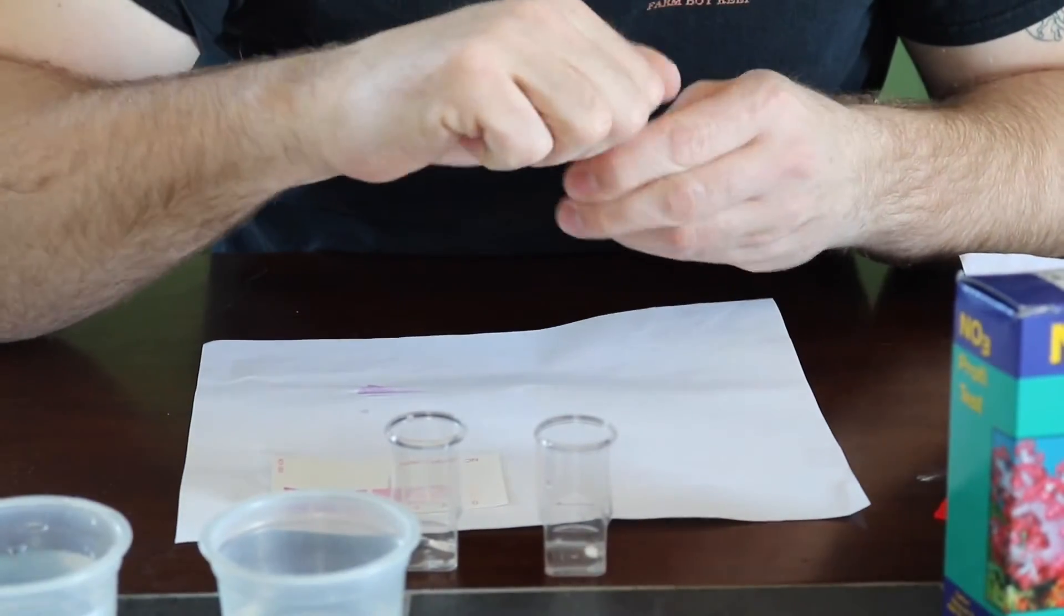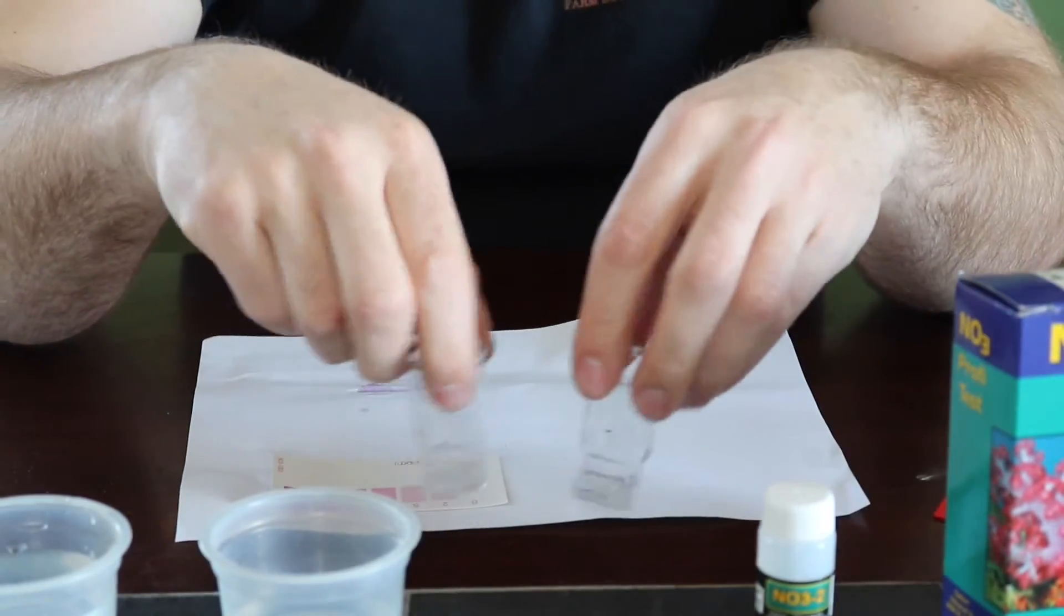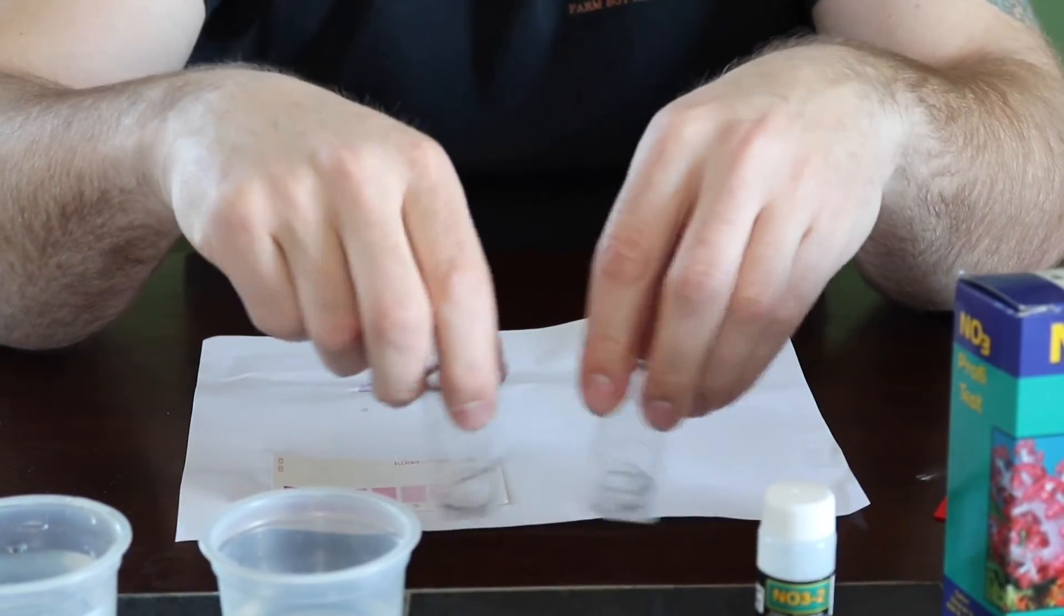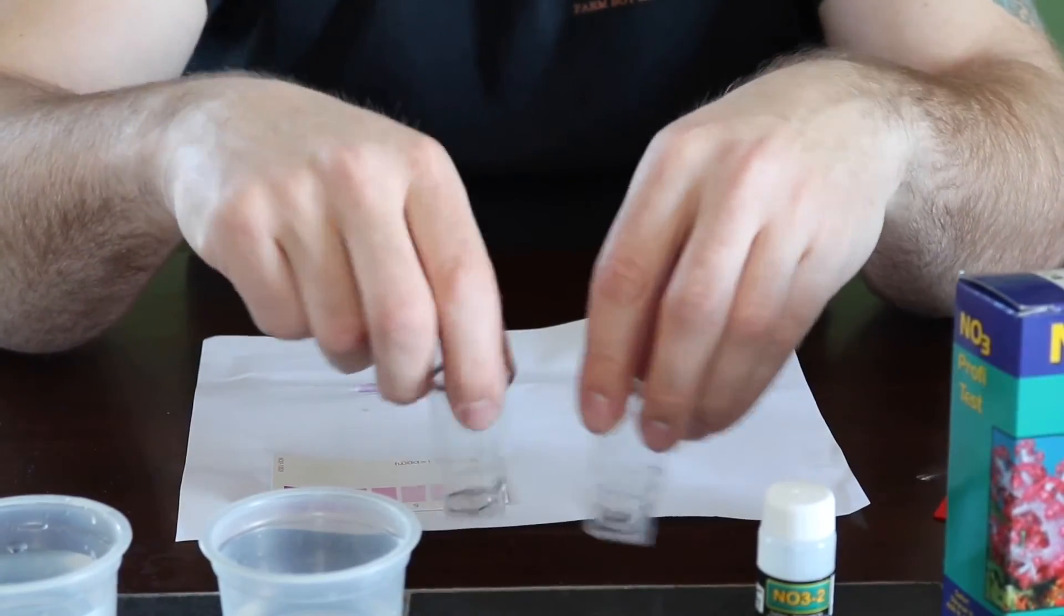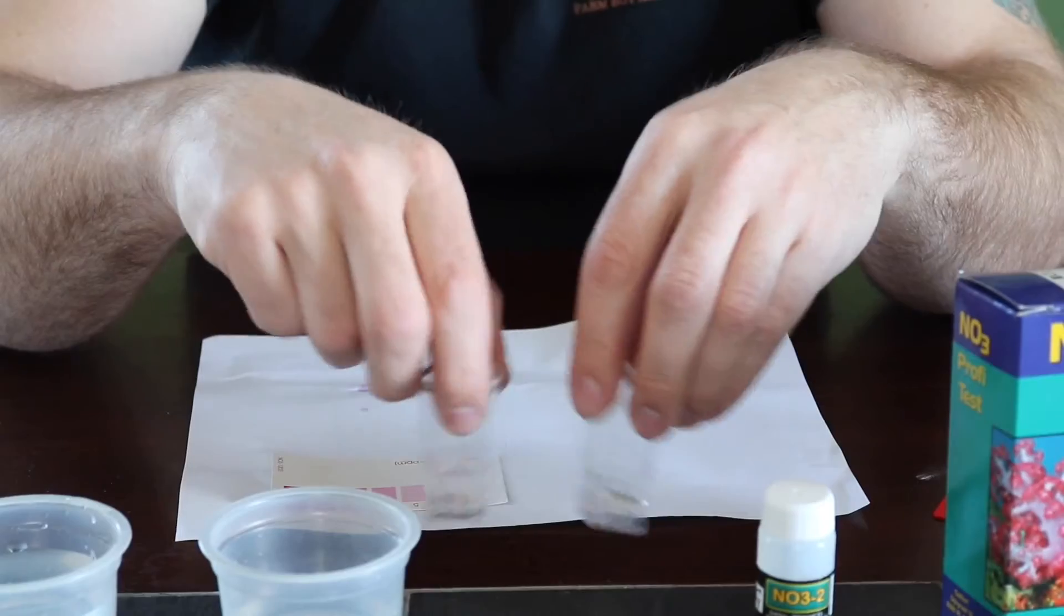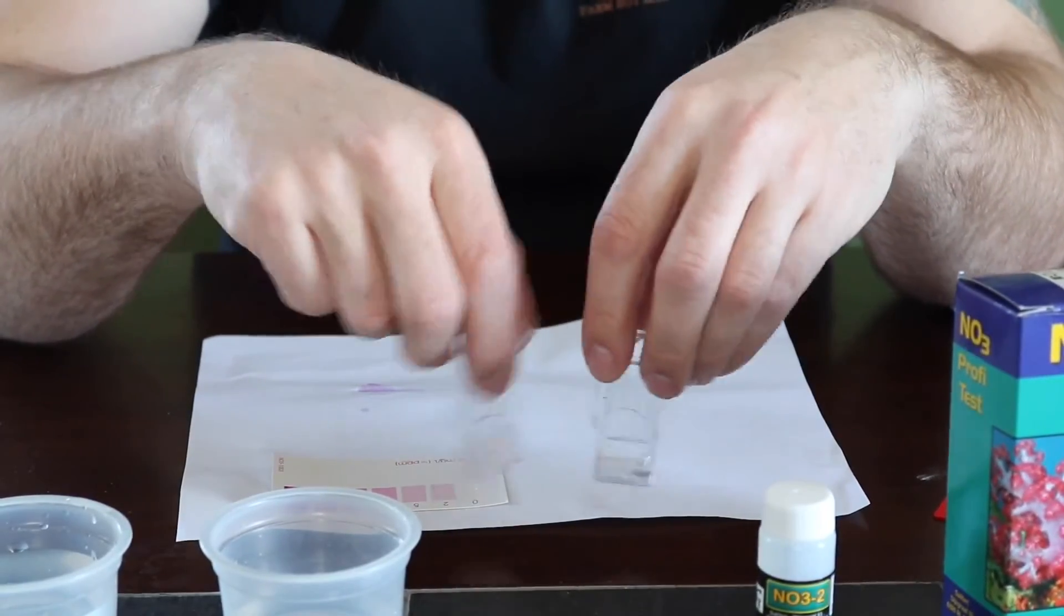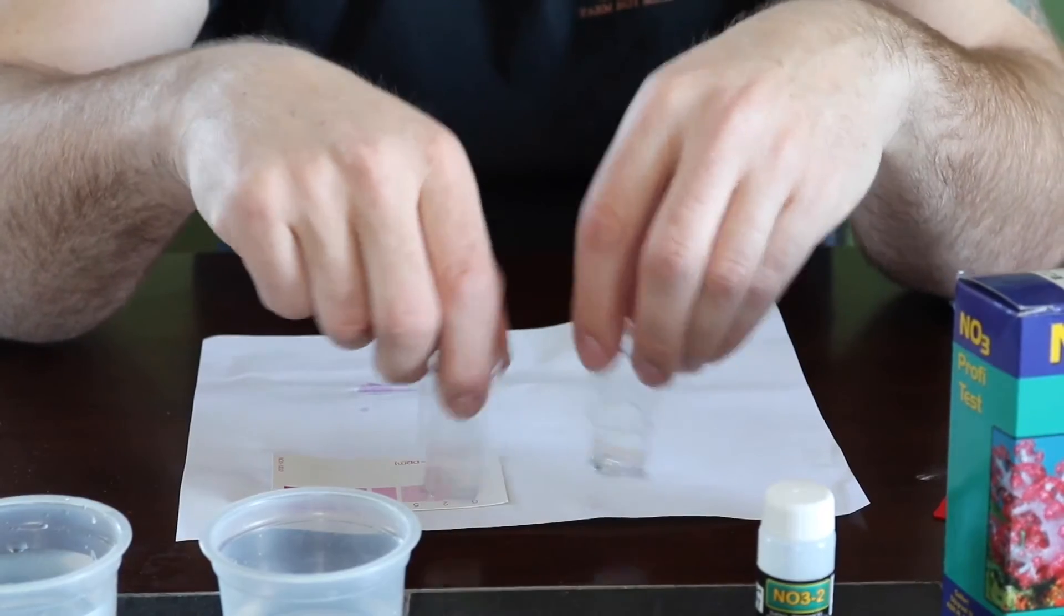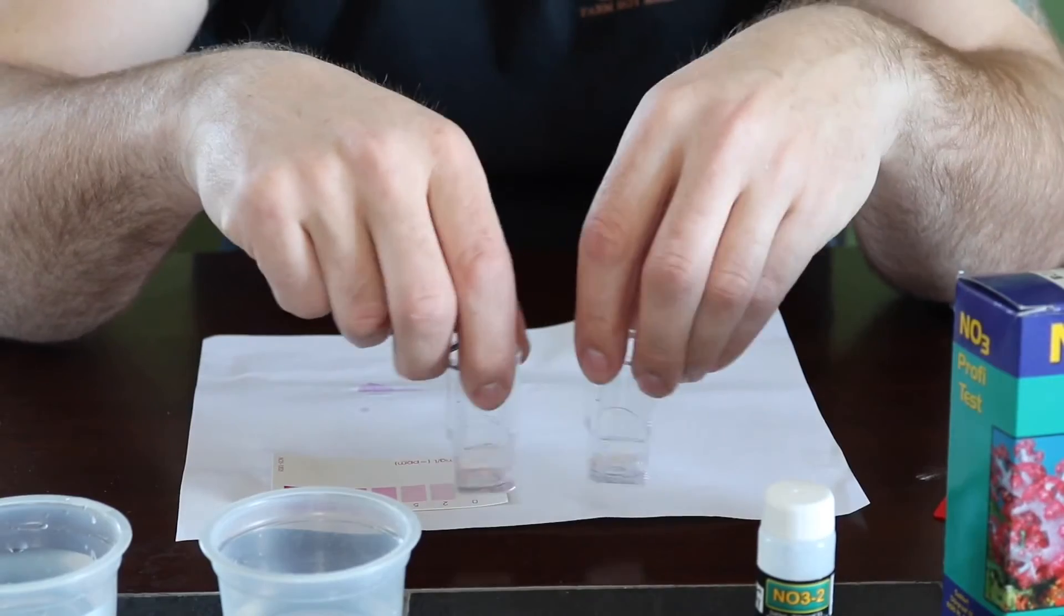And then what we're going to do is we're going to shake these for 30 seconds. So one, two, three, four, five, six, seven, eight, nine, ten, eleven, twelve, thirteen, fourteen, fifteen, sixteen, seventeen, eighteen, nineteen, twenty, twenty-one, twenty-two, twenty-three, twenty-four, twenty-five, twenty-six, twenty-seven, twenty-eight, twenty-nine, thirty.